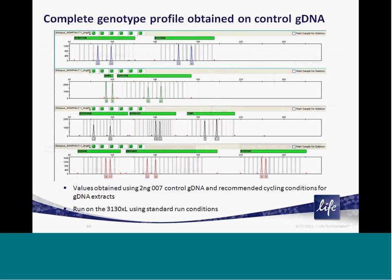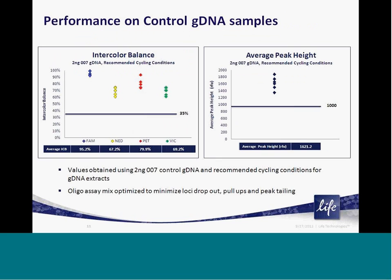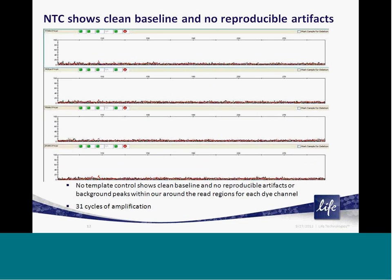When developing the Authentifiler kit, like our other PCR amplification kits for human identity, it is critical for us to ensure high-level specifications for data consistency and reproducibility. The two factors of intercolor balance and average peak height are used as a means to judge these factors. As you can see, each of these specifications are falling well above our minimum specifications for reproducibility and consistency.